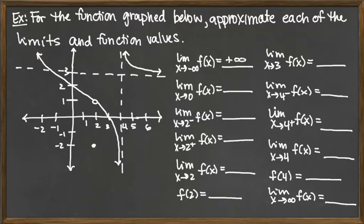Looking at the next one, we're talking about the limit as x goes to zero. The function is nice and continuous there, so both from the left and the right, and right at the function, we're at the y value of 2. These limit values are really y values. So as x approaches zero, our function is approaching f of zero, which is 2. Our answer is 2.